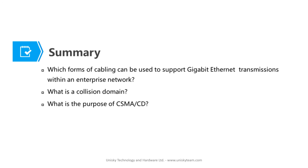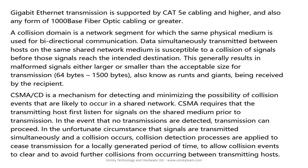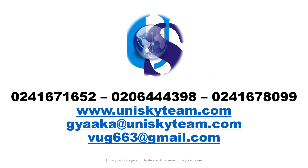This brings us to the end of our first lecture on transmission media. At this point, you should be able to understand which forms of cabling can be used to support Gigabit Ethernet transmissions within an enterprise network. You should also understand what a collision domain is, and know the purpose of CSMA/CD. Thank you for watching — please subscribe to our YouTube channel and you can also contact us via the information provided on the video.